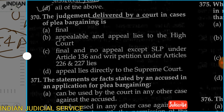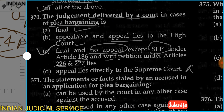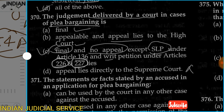Question 370: The judgment delivered by a court in the case of plea of bargaining — is it final? Option A: applicable. Option B: appeal lies to the High Court. Option C: final and no appeal except SLP (Special Leave Petition) under Article 136 and writ petition under Articles 226 and 227. Option D: appeal lies directly to the Supreme Court. The answer is Option C — it is a final judgment but is appealable under Article 136 (SLP) and writ petition under Articles 226 and 227.